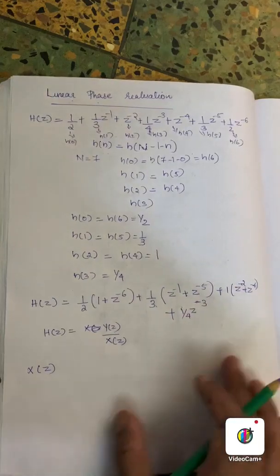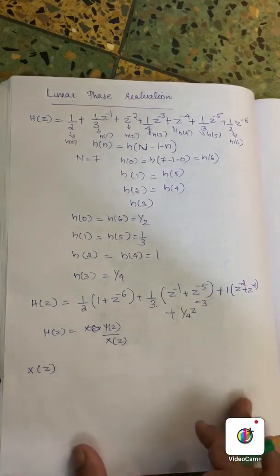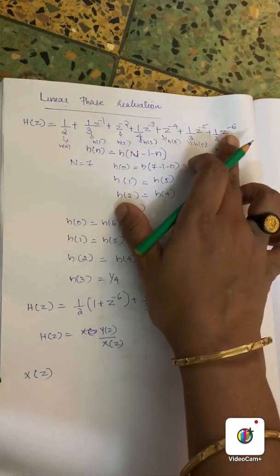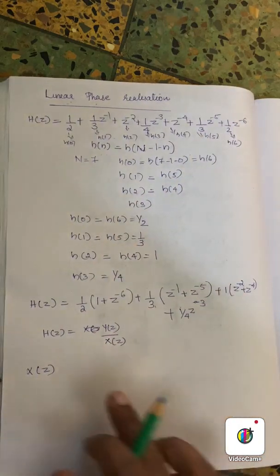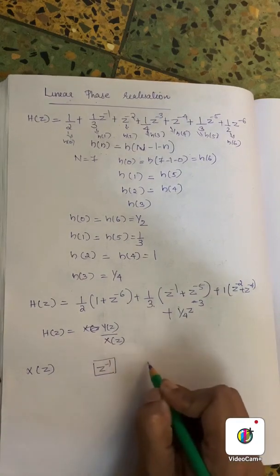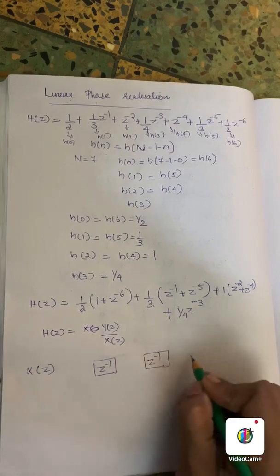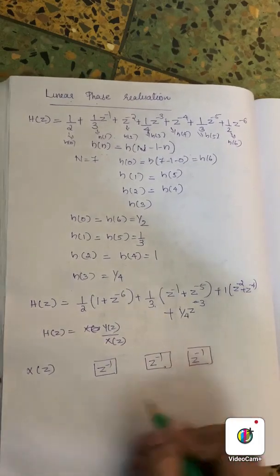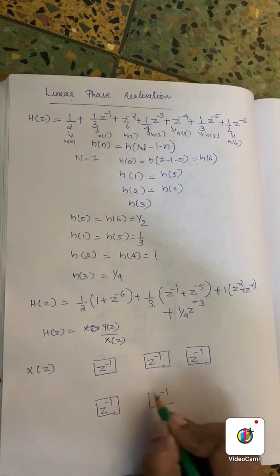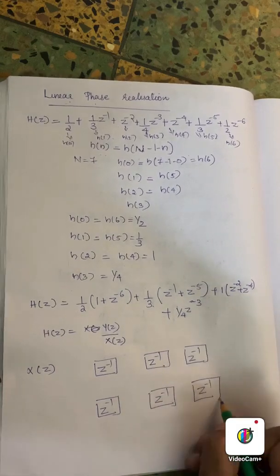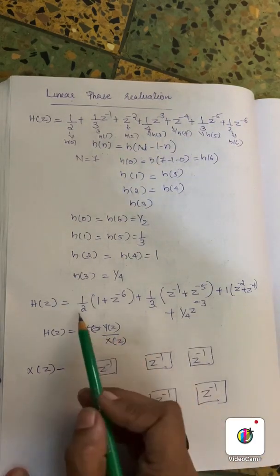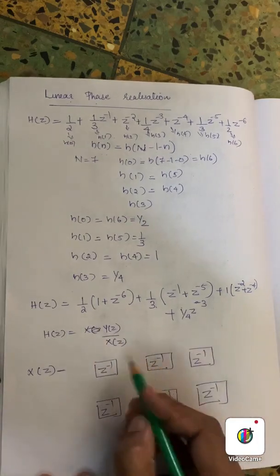X(z) is the input. We chain the delay elements z raised to minus 1. The structure has these delay stages: z raised to minus 1, and this continues through the chain. The input X(z) feeds through the delay line.